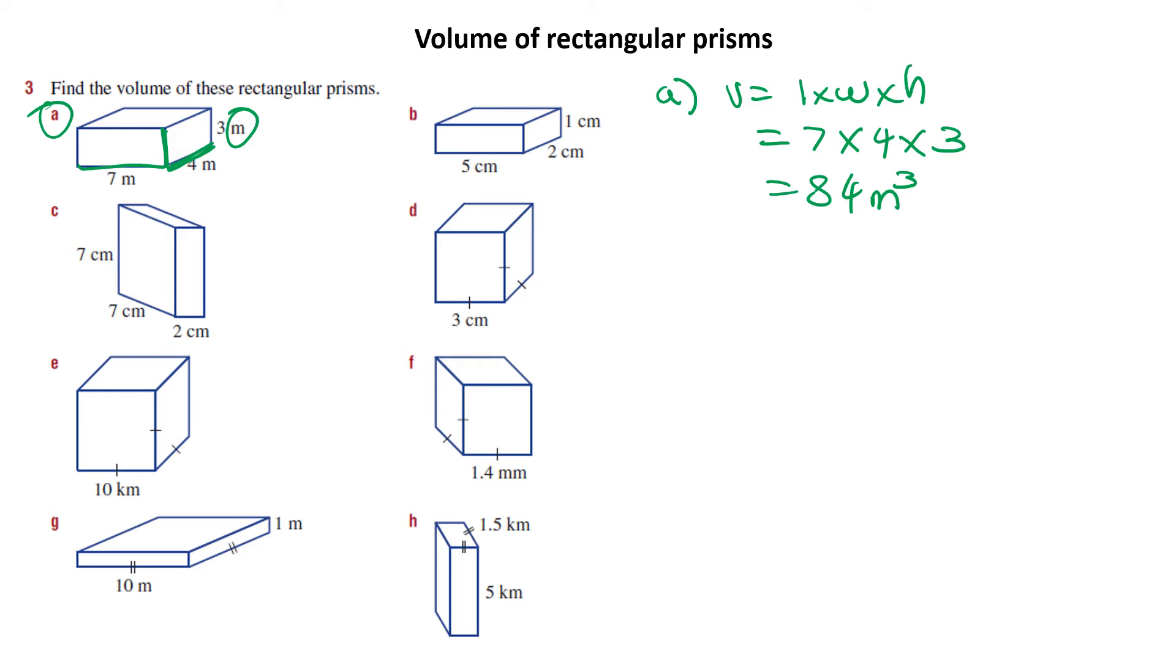B would be very similar, so we'd see it's changed orientation a little bit. So if we did D, it's a cube, so my length, my width, and my height are the same.